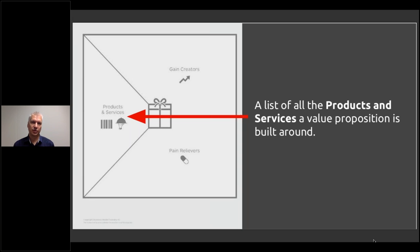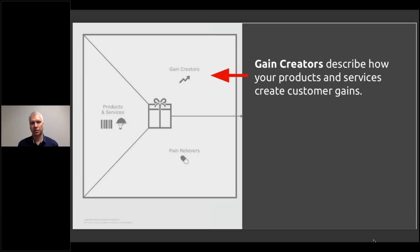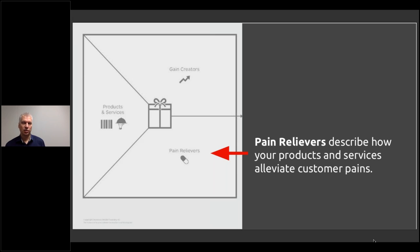Starting with products and services: gain creators describe how the product and service actually create customer gains — what the benefits are in practice and how they are created. The pain relievers describe how the product or service alleviates customer pain — how it takes a problem away. So value is either about removing a pain, bringing additional value, or doing both.